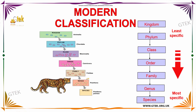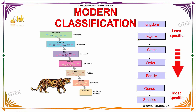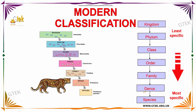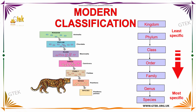The classification starts with kingdom, then phylum, class, order, family, genus, and the final one is species. Here, the classification is given and the exact sample example is given over here.